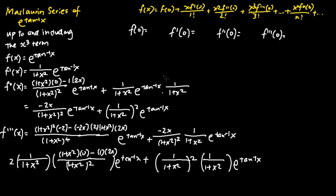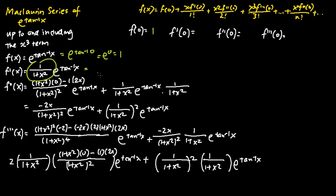Now we can find f(0), f'(0), f''(0), and f'''(0) by substituting x equals 0 into the respective functions. Substituting x equals 0 into f(x), we get e to the power of tangent inverse 0, which equals e to the power of 0, which equals 1. So f(0) equals 1. For f'(0), substituting x equals 0 into f'(x), the fraction 1 over 1 is just 1, and e to the power of tangent inverse 0 is e to the power of 0, which is also 1. So f'(0) equals 1.